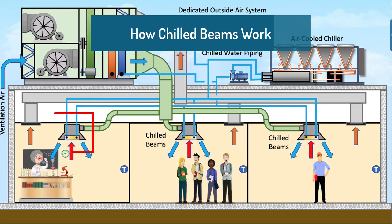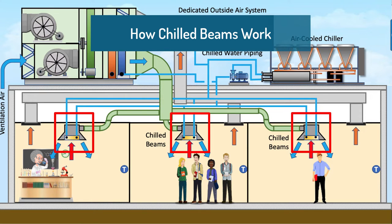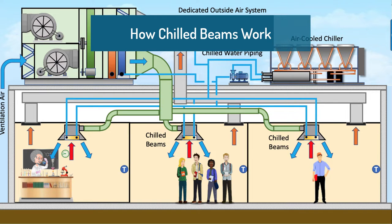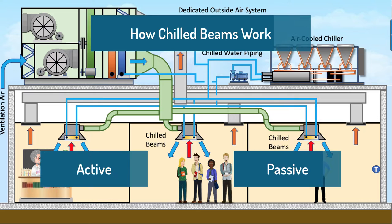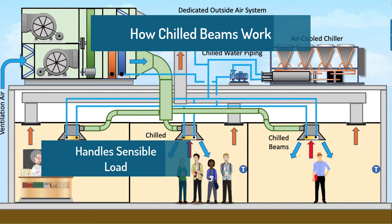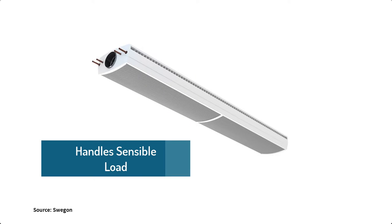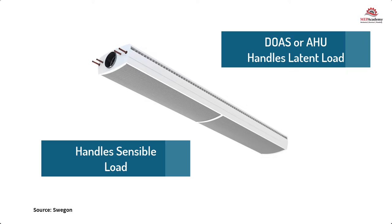The use of chilled beams allows for a reduction in the size of air handlers and chillers, as less primary air is served to the space and higher temperatures of chilled water are used for cooling. Chilled beams are either of the active or passive type. The chilled beam will take care of the sensible requirements of the space, while the dedicated outside air system or air handler will handle ventilation requirements.